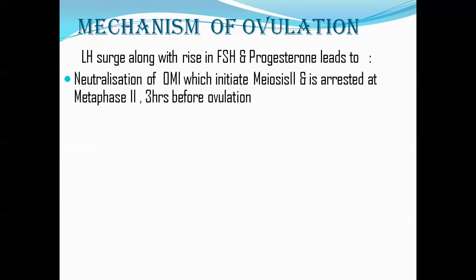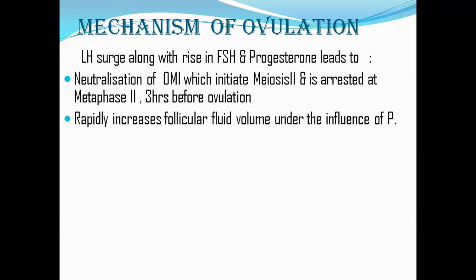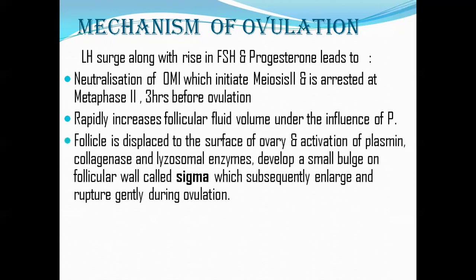First is neutralization of OMI — oocyte maturation inhibitors — which had been inhibiting the primary oocyte in meiosis 1. Neutralization of OMI allows the oocyte to enter the second meiotic division, arrested at metaphase 2, occurring 3 hours before ovulation. Then there is a rapid increase in follicular fluid volume, mainly under the influence of progesterone.